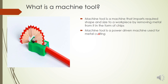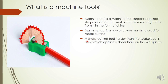Every machine tool is a power-driven machine used for metal cutting. Power is required to remove metal in the form of chips and to obtain a relative motion between the tool and workpiece. Either the workpiece rotates while the sharpener stays stationary, or vice versa — a relative rotational motion is necessary. In a machine tool, you rotate either the workpiece, the cutting tool, or both.